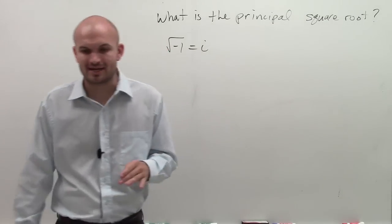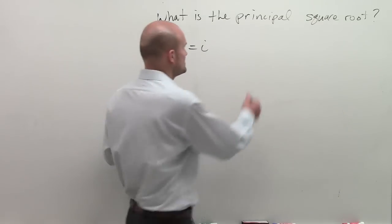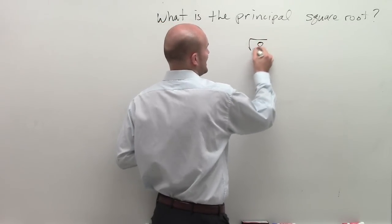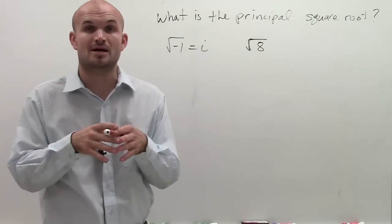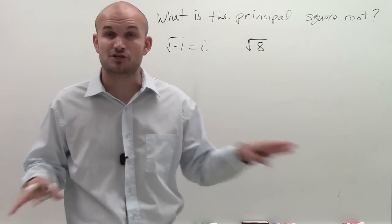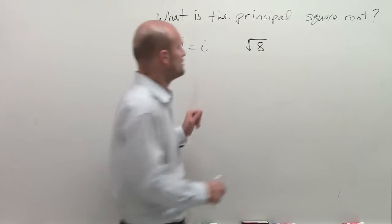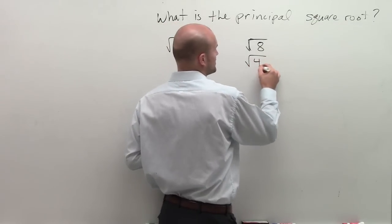The next thing we need to remember is how do we simplify square roots? Let's say I give you the square root of 8. There's a couple different ways you could work on simplifying the square root of 8. You could use prime factorization, factor tree. We could also rewrite it as a product of a square number.